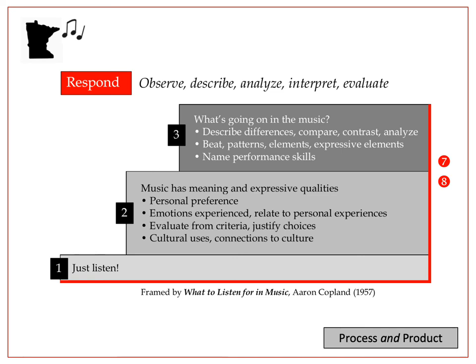At level 3, Copland said listeners try to analyze the music: Is there an ostinato? What is that instrument? Did the meter just shift? How did the performer create that sound? These questions all coincide with benchmark number 7. More than 60 years earlier, it seemed as though Aaron Copland had already validated the knowledge and skills students are being asked to demonstrate now.